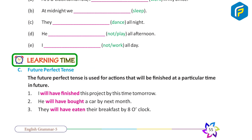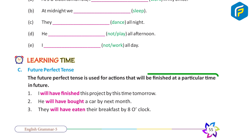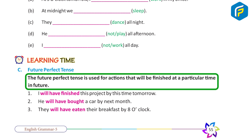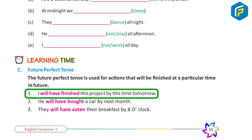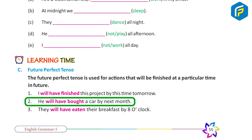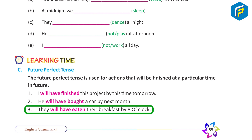Future Perfect Tense: The future perfect tense is used for actions that will be finished at a particular time in the future. Examples: 1. I will have finished this project by this time tomorrow. 2. He will have bought a car by next month. 3. They will have eaten their breakfast by 8 o'clock.